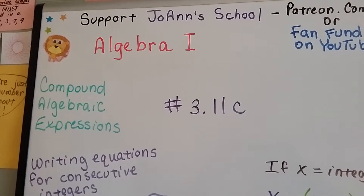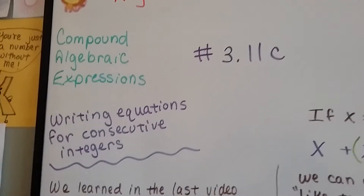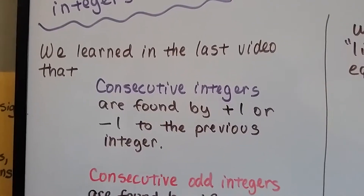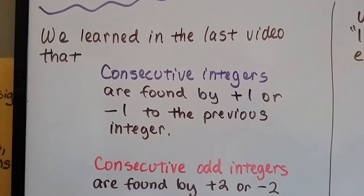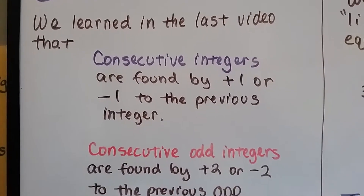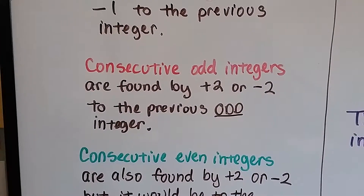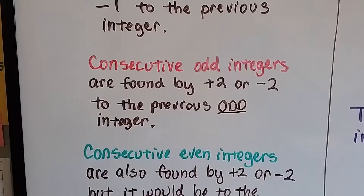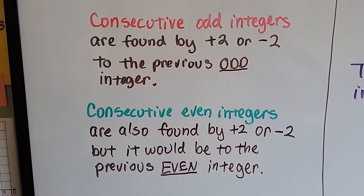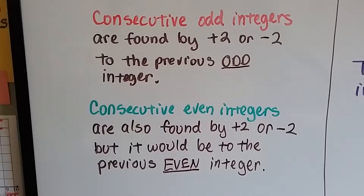Algebra 1, number 3.11c. We're talking about compound algebraic expressions still, and we're writing equations for consecutive integers. We learned in the last video that consecutive integers are found by adding or subtracting 1 to the previous integer. Consecutive odd integers are found by plus 2 or minus 2 to the previous odd integer, and consecutive even integers are also found by plus 2 or minus 2 to the previous even integer.